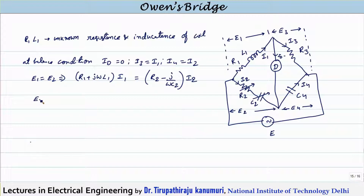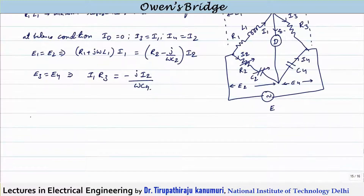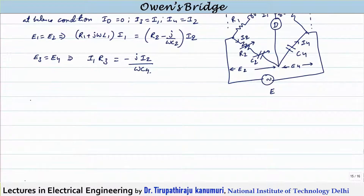Similarly, E3 is equal to E4. E3 is I3 multiplied by R3. Since I3 is equal to I1, I can write it as I1 multiplied by R3. This will be equal to I2 multiplied by 1/(jωC4), or we can write minus j times I2 divided by ωC4, because I4 is equal to I2. From these equations, we will try to draw the phasor diagram first.